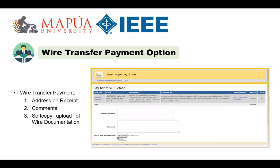For wire transfer payment, you will be asked to indicate the address on the receipt, any comments, and a soft copy upload of the LOU or wire documentation.